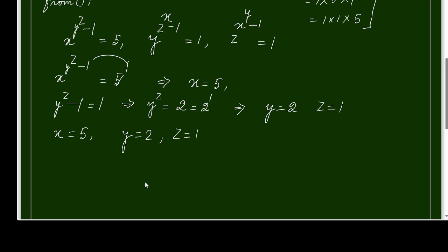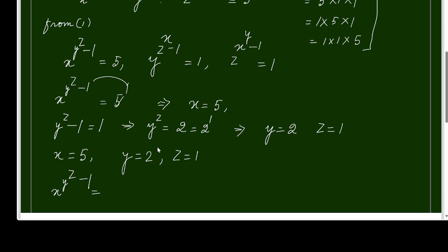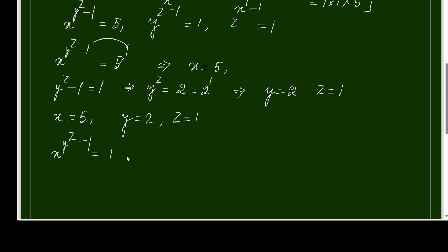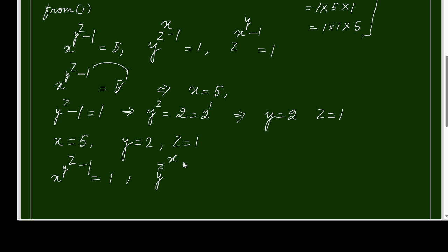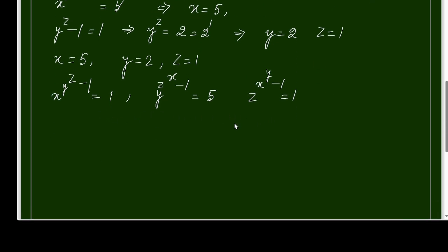For the second option: x^(y^z − 1) = 1, y^(z^x − 1) = 5, and z^(x^y − 1) = 1. Solving this gives y = 5, x = 1, and z = 1. So another solution triplet is x = 1, y = 5, z = 1.